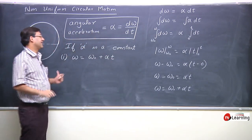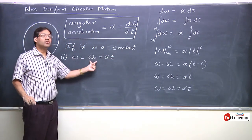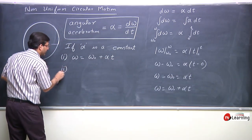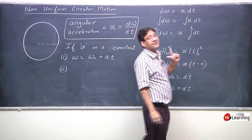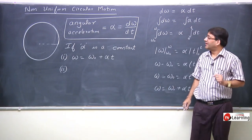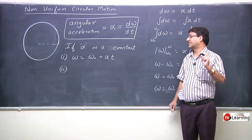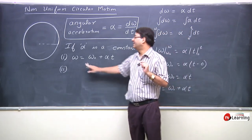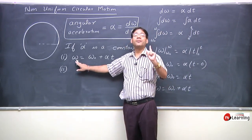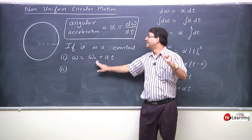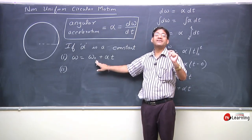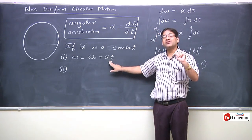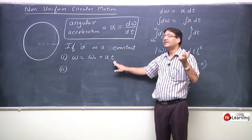This equation ω = ω₀ + αt is exactly analogous to the first equation of motion in 1D: v = u + at. Here ω is final angular velocity (analogous to v), ω₀ is initial angular velocity (analogous to u), alpha is angular acceleration (analogous to a), and t is time.